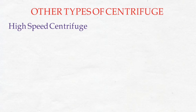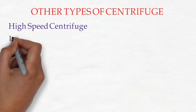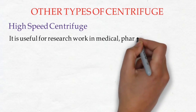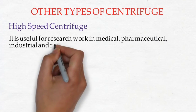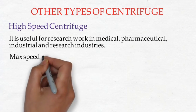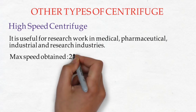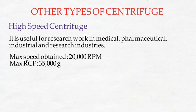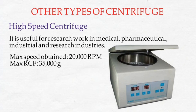Now we will see other types of centrifuge. The first is the high speed centrifuge, useful for research work in medical, pharmaceutical, industrial, and research settings. The maximum speed achievable is 20,000 RPM and a maximum RCF of 35,000 times gravity. Here is a working model example of it.